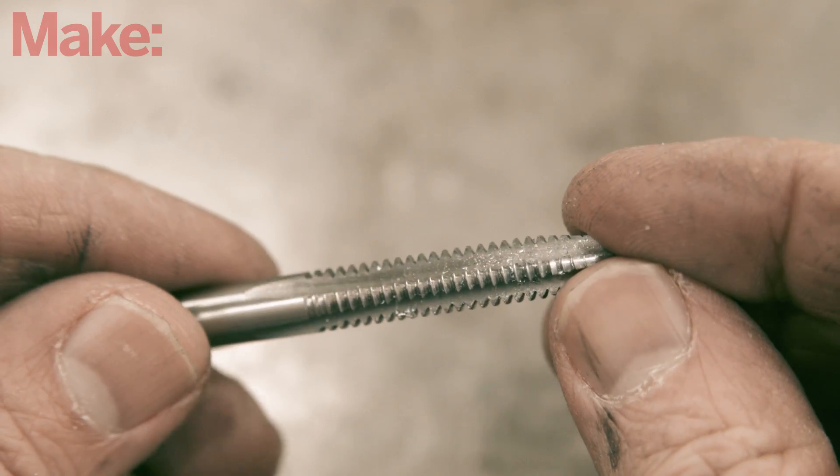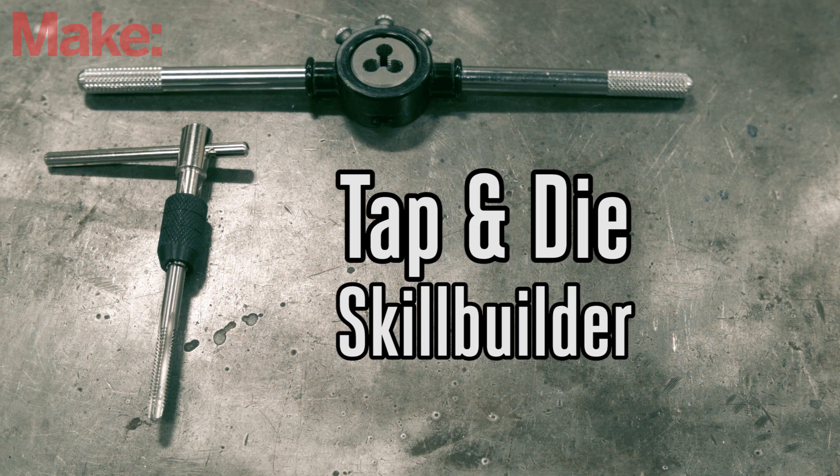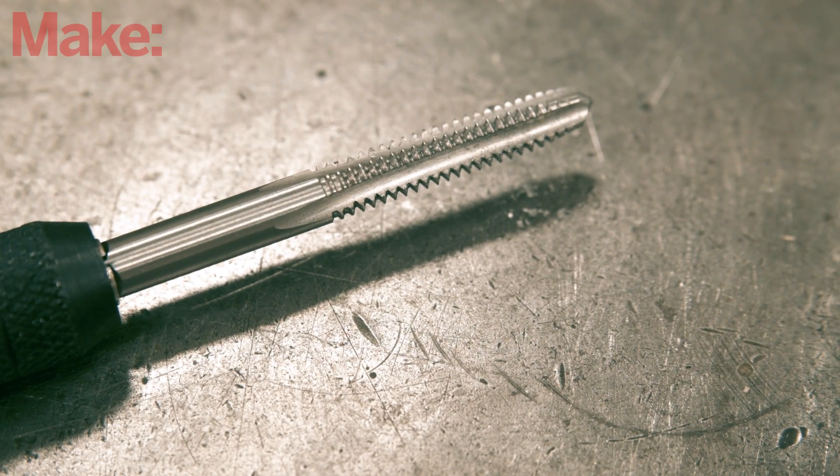In this video we'll go over the tap and die, a set of tools that allows you to make your own threads wherever you need them. A tap is a tool that cuts threads into a hole so that a bolt can be screwed into it.